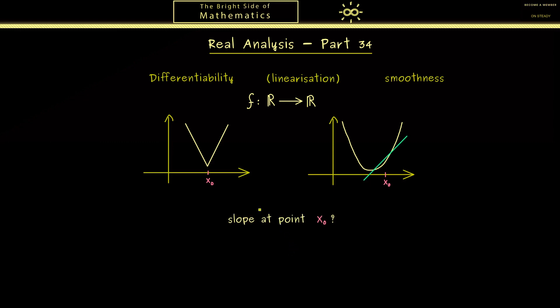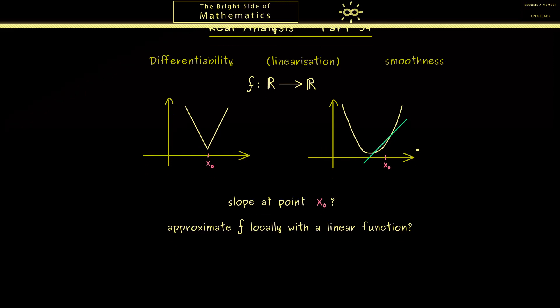Hence the question about the slope at a given point is related to the question if we can approximate a function locally with a linear function. And indeed that's the meaning of the term linearization. Therefore in the next step let's look at a linear function.